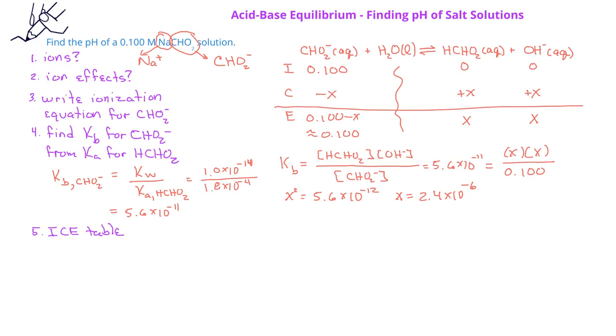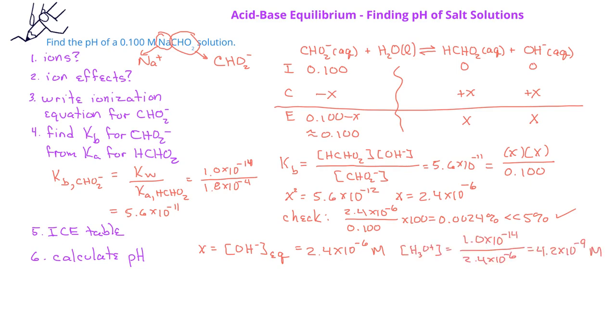We can check to make sure our assumption was valid, and sure enough, that's the case. Now we know that X is equal to the concentration of the hydroxide ion at equilibrium, which is 2.4 times 10 to the minus 6. We can use this and the value of Kw to find the hydronium ion concentration, 4.2 times 10 to the minus 9 molar.